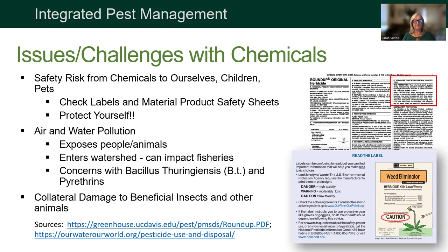There are a lot of challenges with chemicals — to ourselves, our children, and our pets. If you are going to use a chemical, check the label and get the material safety data sheet. The EPA requires products to list danger, warning, and caution prominently. Caution is low toxicity, warning is moderately toxic, and highly toxic products I would stay away from entirely. People often don't read the label and start spraying indiscriminately. You need to protect yourself — wear goggles, full coverage clothing, long pants, long sleeves, shoes, and gloves, and wash them separately.